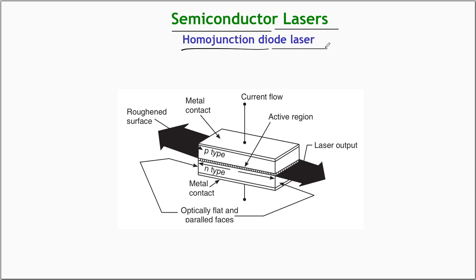A semiconductor laser is a specially fabricated PN junction diode — it is essentially a diode. The light emitting mechanism in an LED and the laser diode is the same. There is a striking difference between solid state lasers and semiconductor lasers: the light production mechanism itself is different. Electronic transitions are responsible for solid state and gas lasers, while the recombination of electrons with holes is responsible for the emission process in the case of a semiconductor laser. The same mechanism is also responsible for light emission in an LED.